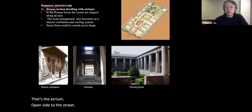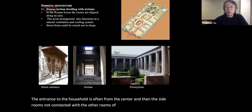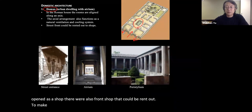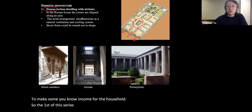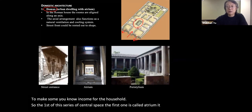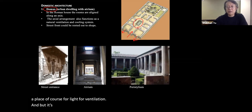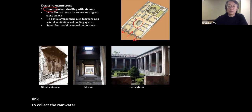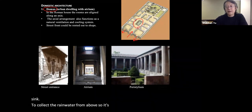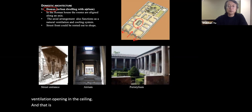The entrance to the household was often from the center. The side rooms, not connected with the other rooms of the house, were usually opened as shops that could be rented out to make some income. The first space in this series is called the atrium — a place for light and ventilation. In the middle is essentially a sink to collect rainwater from above, so it's purely a light and ventilation opening in the ceiling. The exterior wall of the Roman domus was largely windowless.